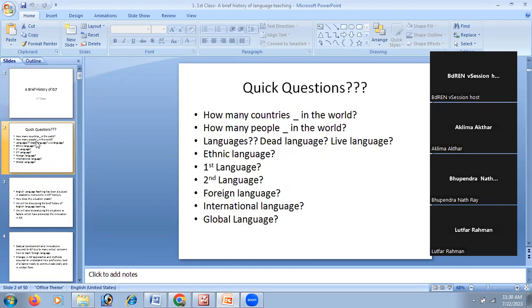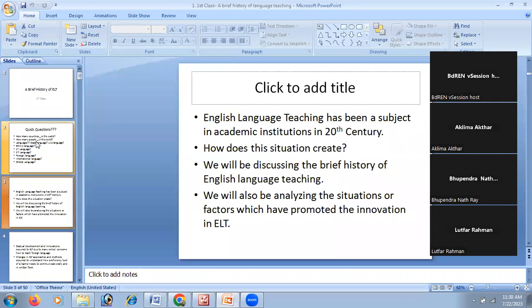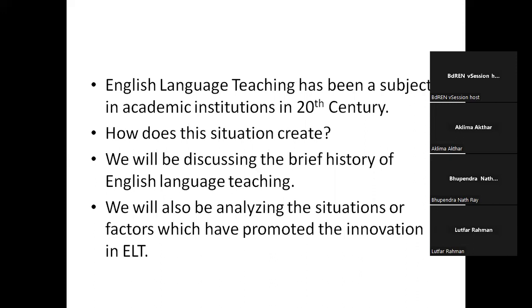In discussing the history of English language teaching, we have to consider the world population, world languages, death languages, first language, second language, foreign language, international language, and global language. At present, many languages are used in different parts of the world. English is used in five countries as their first language: USA, Canada, Australia, and New Zealand. But apart from these countries, other countries also use English.